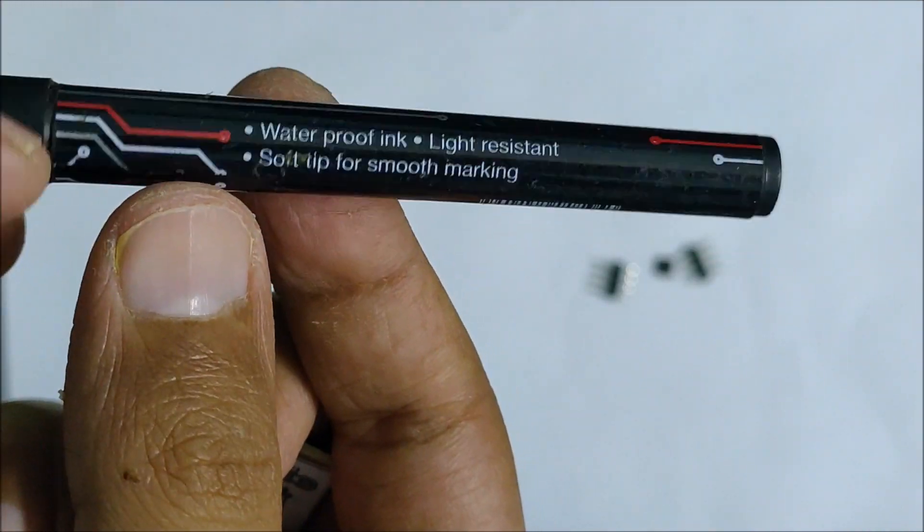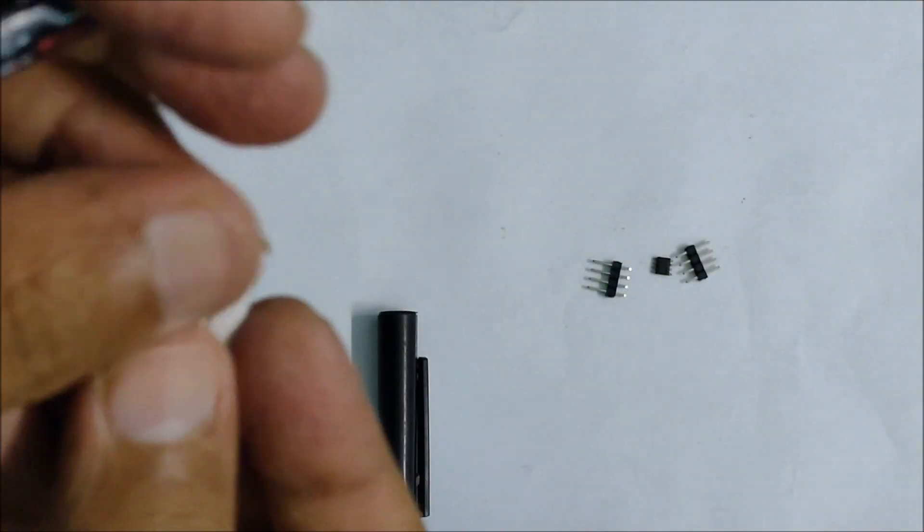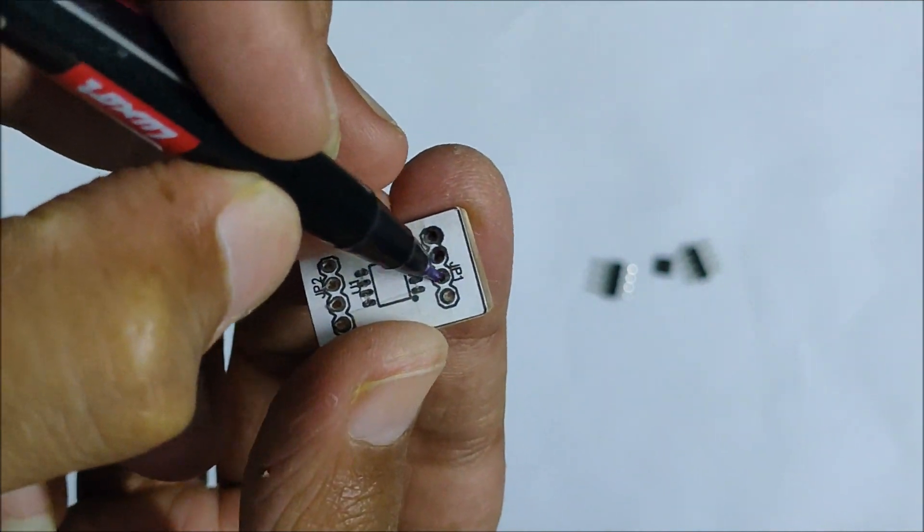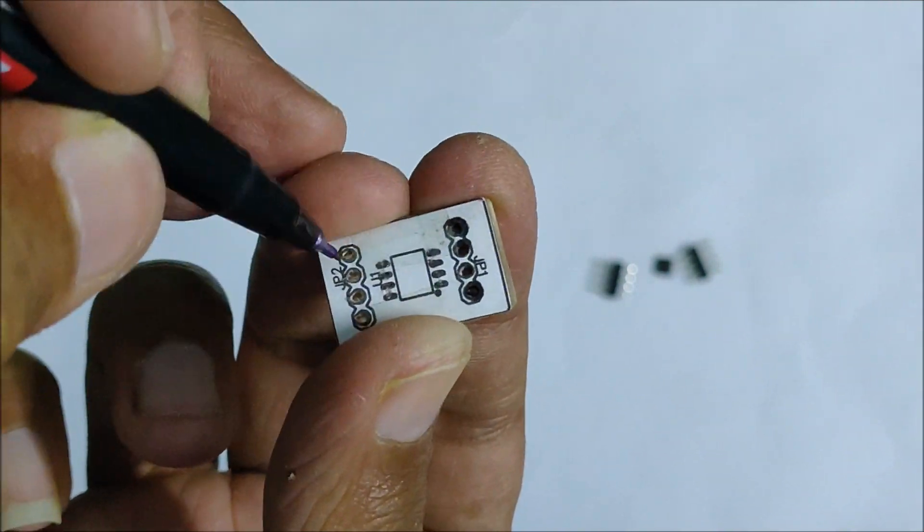With the help of the permanent marker, I now mark the position of the pins of the SMD IC and the male header pins on the copper clad board with the previously made holes that I had done on the printout.